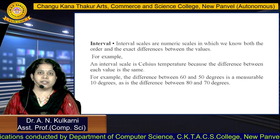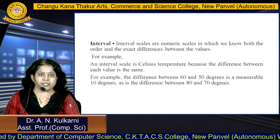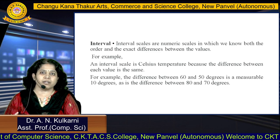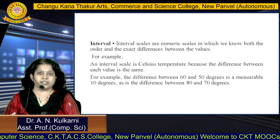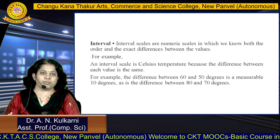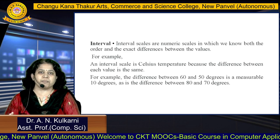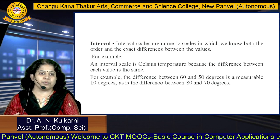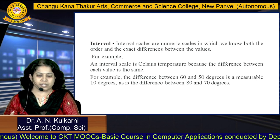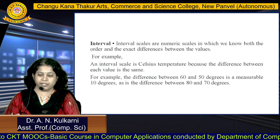Next is interval data. Interval scales are numerical scales in which we know both the order and exact differences between the values. An example of an interval scale is the Celsius temperature, because the difference between each value is the same. For example, the difference between 60 and 50 degrees is measurable — that is 10 degrees — which is the same as the difference between 80 and 70 degrees. This is nothing but interval data.